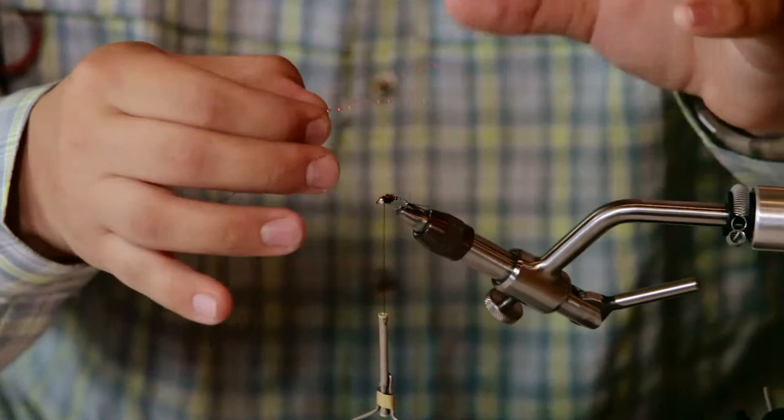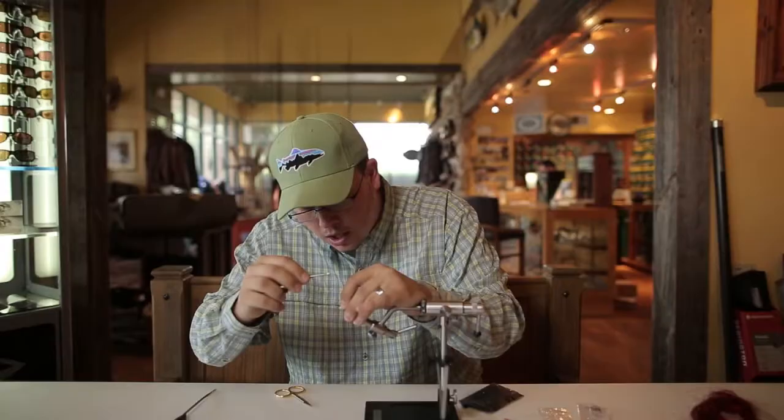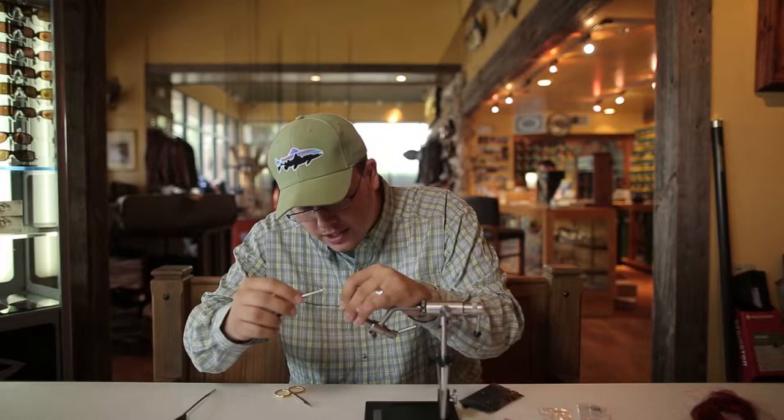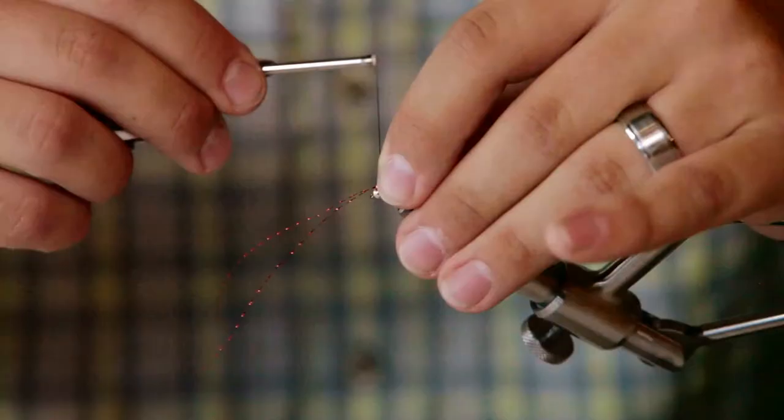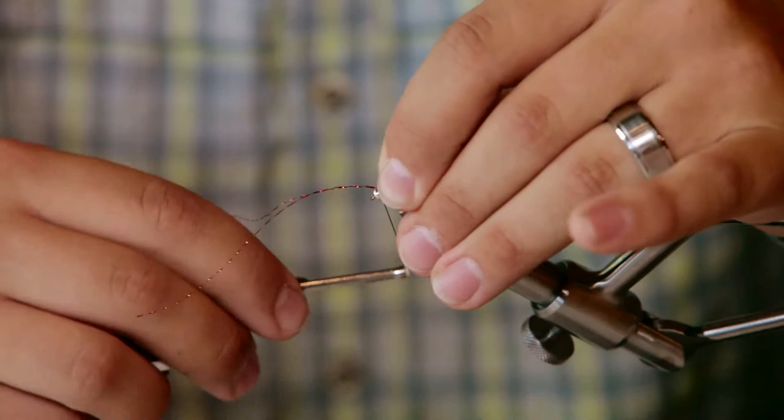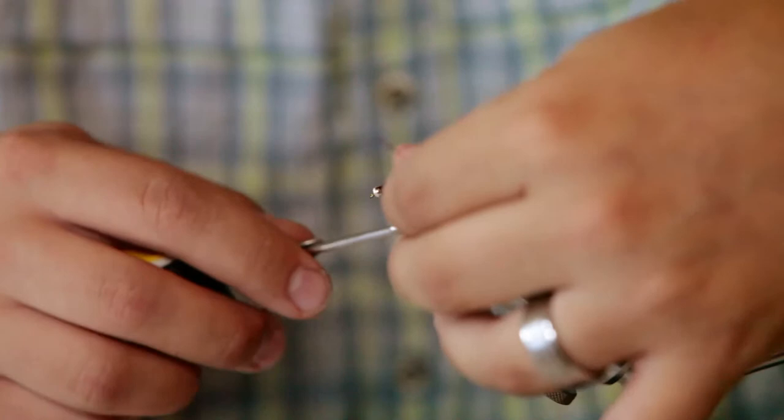I like to tie in red crystal flash as my legs. Once again I think red is the key to this fly, and so I think this just adds to its catching ability. But that could just be me. So I'm going to take the two strands of red flash and tie it in on one side. I'm going to give it two wraps. I'm then going to take the two other strands and fold them over, and do two wraps.